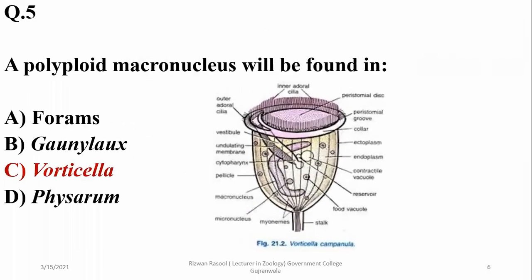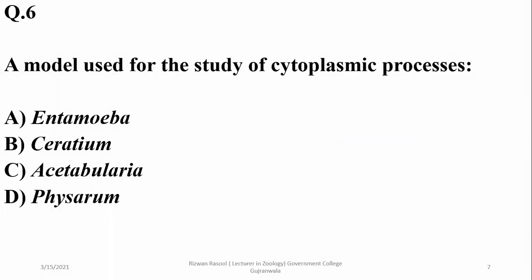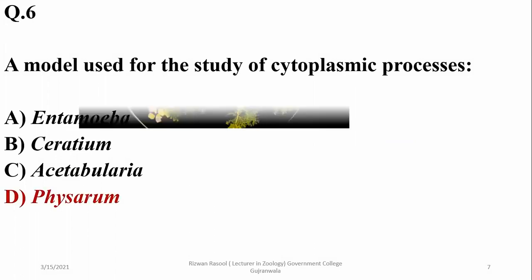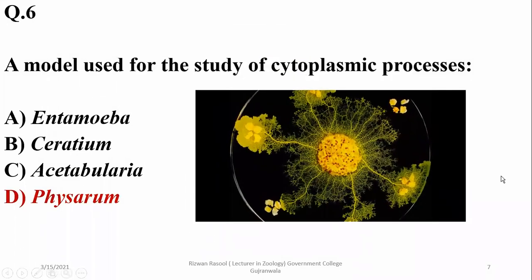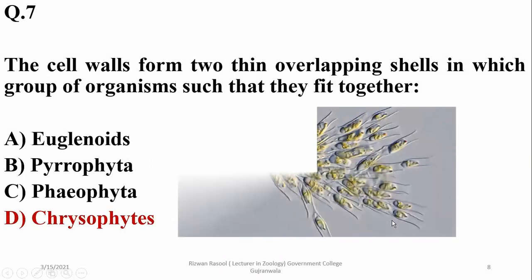Vorticella has a large polyploid macronucleus and multiple smaller micronuclei. The model organism used for the study of cytoplasmic streaming processes is Physarum polycephalum. The organisms whose cell walls form two thin overlapping shells that fit together are Chrysophyta, or diatoms.